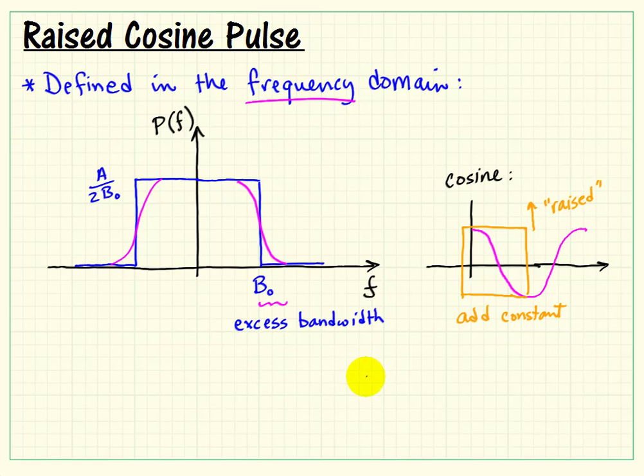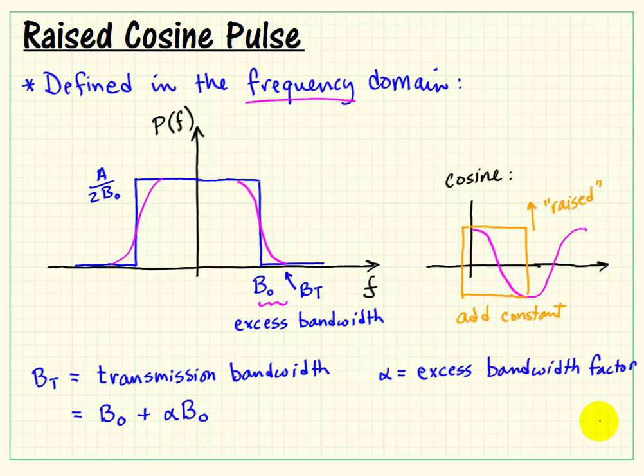Now, this also means that the bandwidth of our pulses increased a bit, and this difference then between the minimum Nyquist bandwidth and the transmission bandwidth is referred to as the excess bandwidth. So the actual transmission bandwidth would be the minimum required, the B₀, plus this so-called excess bandwidth, which is given by the scale factor alpha times B₀, where alpha, the so-called excess bandwidth factor, is a constant between 0 and 1. Alternatively, we could say that alpha is 0 to 100 percent. So this particular picture that I've sketched is for alpha at 0.4.